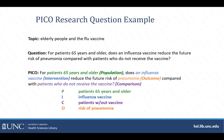Using the PICO framework can help you make sure that all the elements important for your review are included in the review question, and can help you move from the review question to the key concepts upon which you will want to base your literature search. The next section of the workshop will focus on the scope of the review.